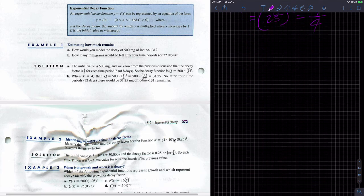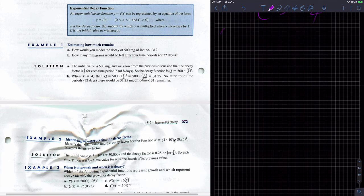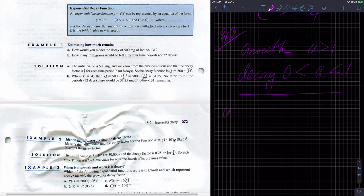Example three. Which of the following exponential functions represent growth and which represent decay? Identify the growth or decay factor. So remember, growth is when A is greater than 1 and decay is when A is less than 1 but greater than 0.